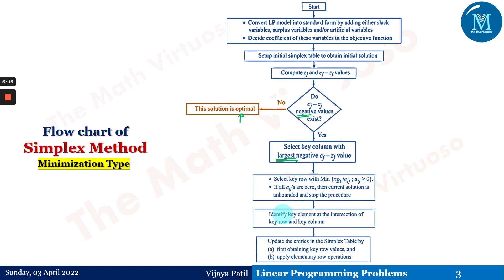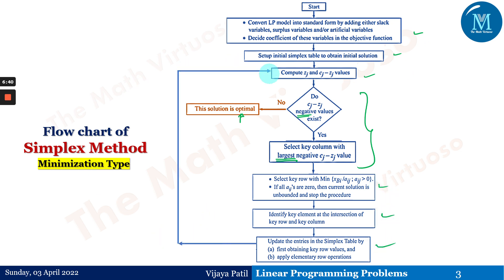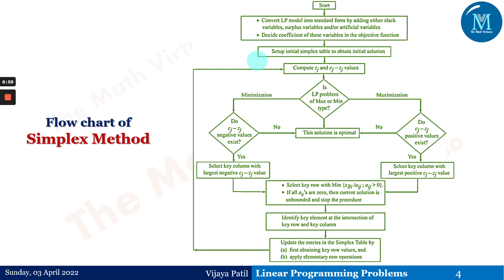Then the same procedure applies: select the key column with the largest negative Cj minus Zj value. In maximization we considered the largest positive; here we consider the largest negative Cj minus Zj value. The same procedure follows for the ratio, key element, and key column. Steps one, two, and three are the same for both; we then go back to computing Zj and Cj minus Zj for minimization.